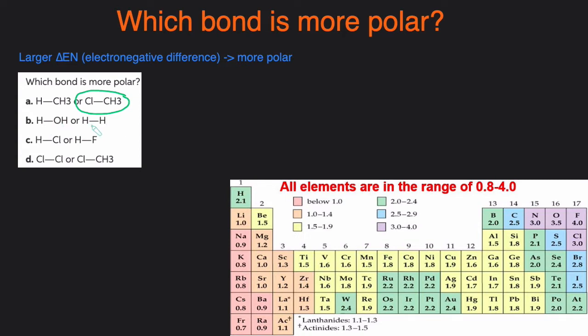Next one we have H-O versus H-H. Even just without looking at the table we know that H-O is going to be more polar because H and H have the exact same electronegativity. So that means the difference is zero. To confirm: 2.1 minus 2.1 versus 3.5 and 2.1 which is a difference of 1.4.